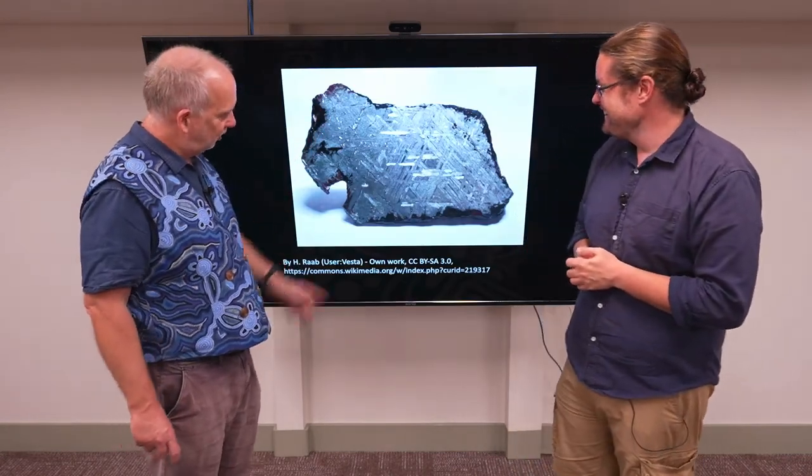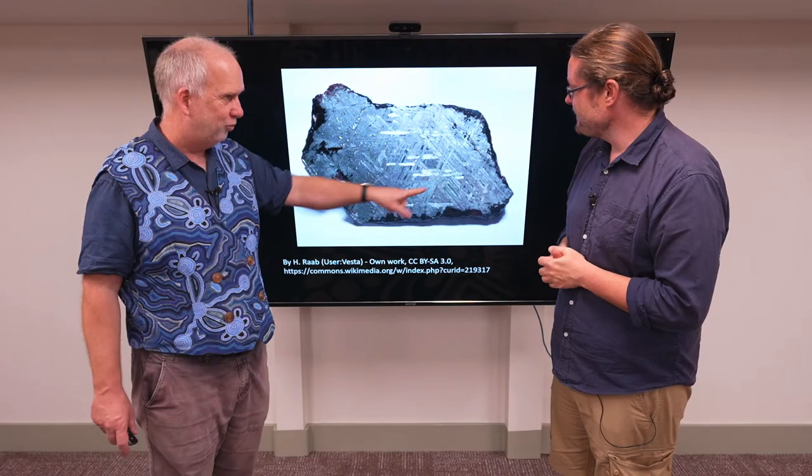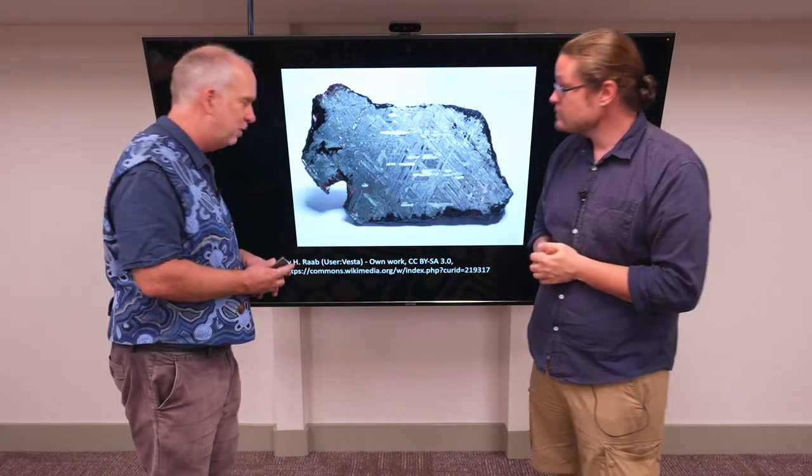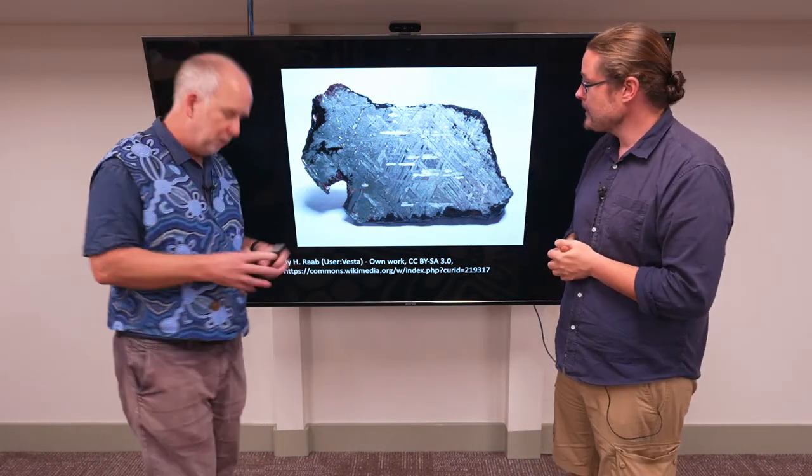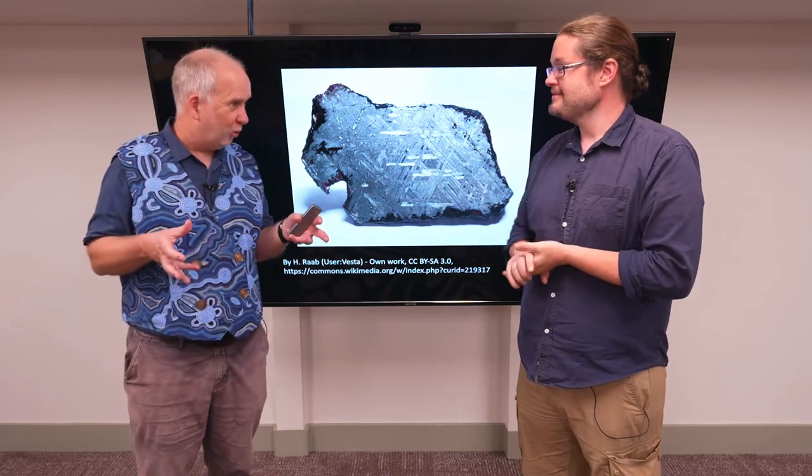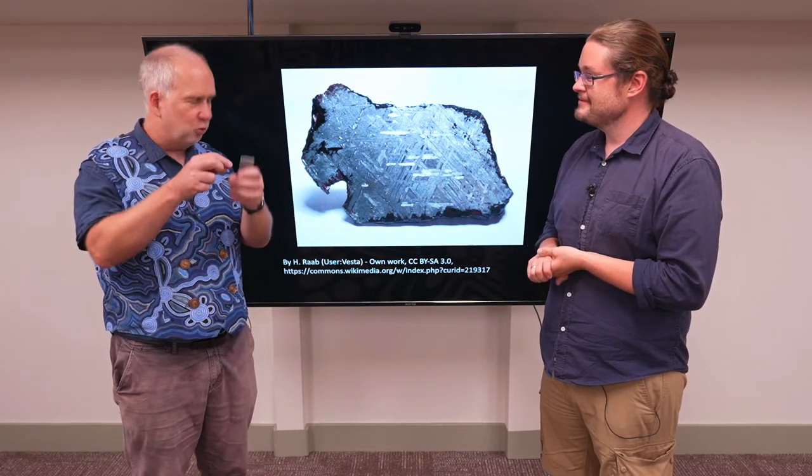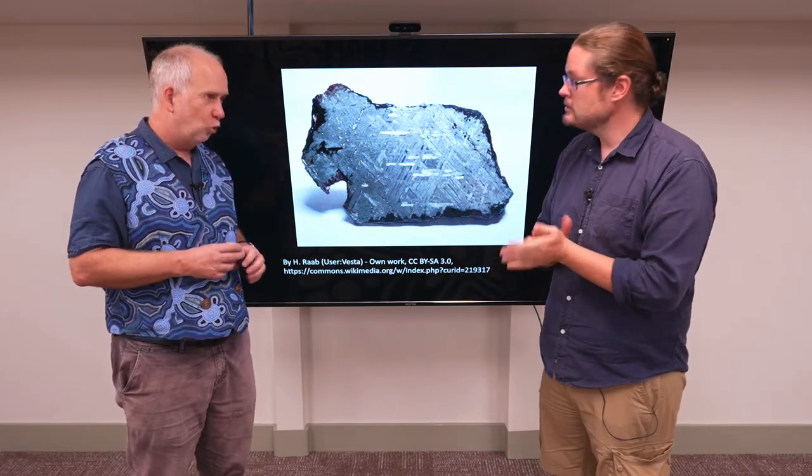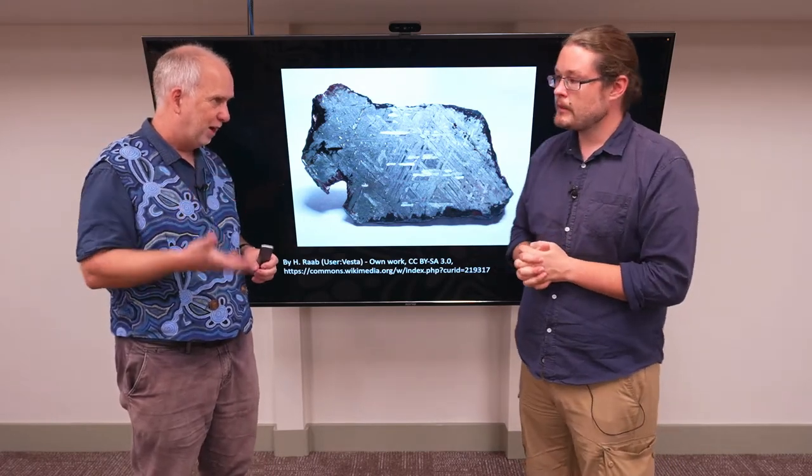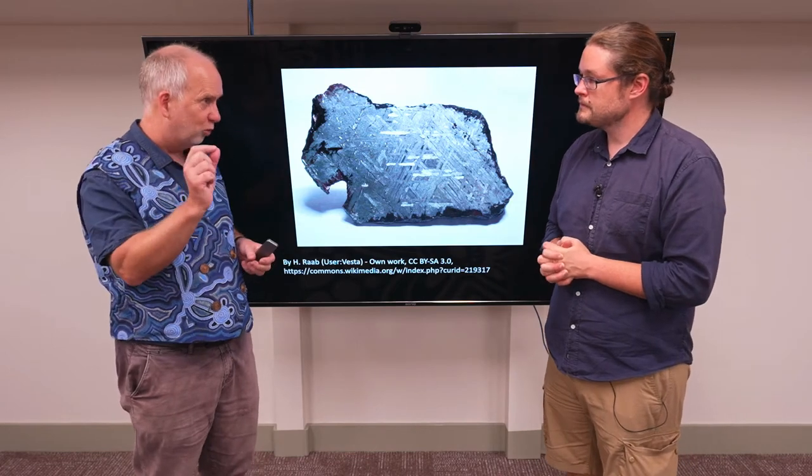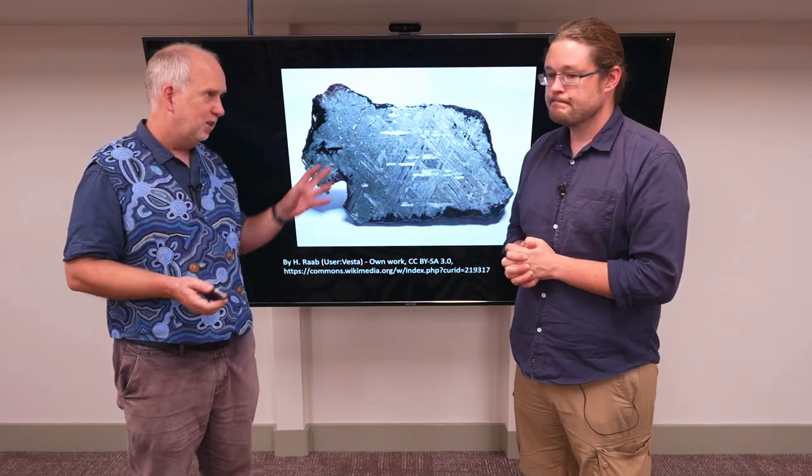If you look at the inside of these things, you see enormous crystals of nickel and iron. These are called Widmanstätten patterns. Normally when something cools down, you get crystals forming, but they don't have very long for the minerals to arrange themselves. So normally the crystals are too small to see with the human eye. If you try cooling down steel in a sword or something, the crystals are too small to see without a microscope.